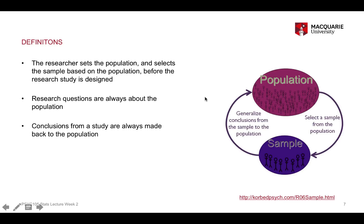When you collect and analyse data from a sample and make a conclusion, those conclusions are always made back to a population. The take-home message from a study is always applied back to a wider population. If your sample isn't representative of the population, that can lead to problems when making conclusions. A sample needs to be selected so it's representative — not a biased or misleading representation of the population. If your sample is unrepresentative, you can have flaws in your conclusions.